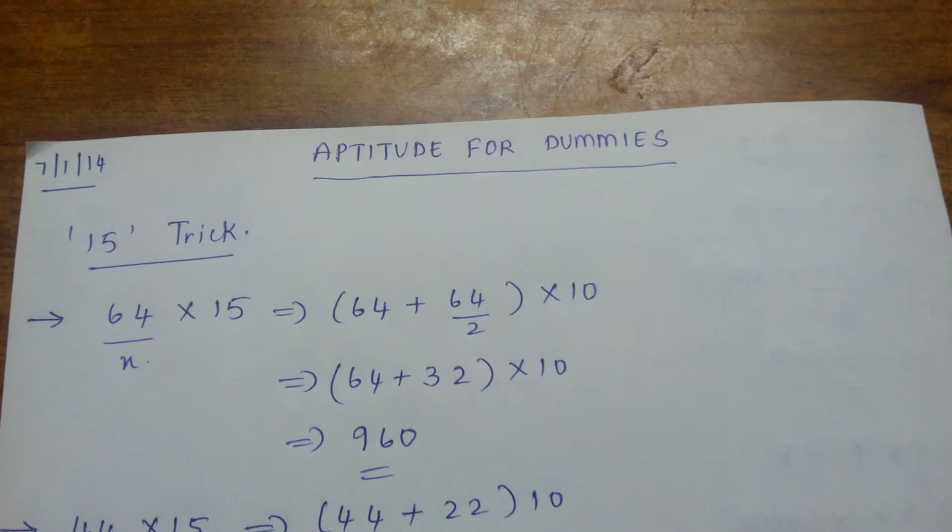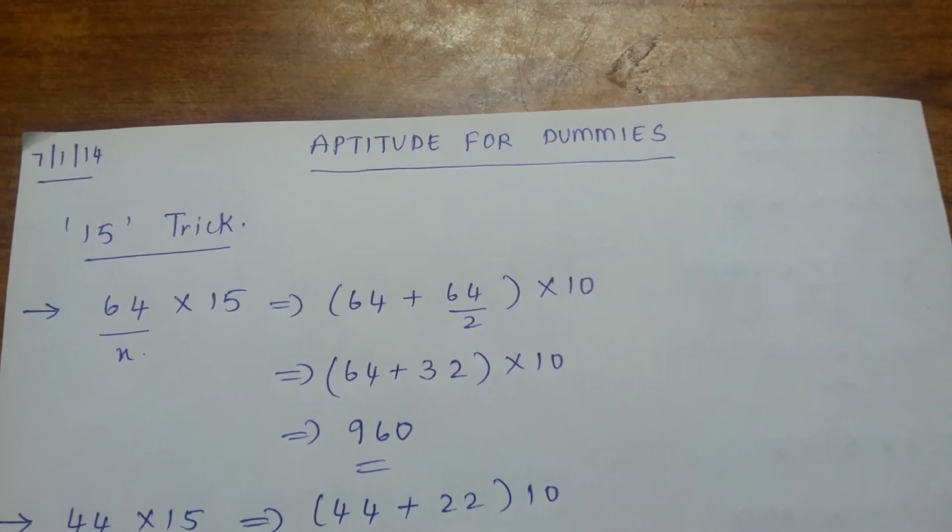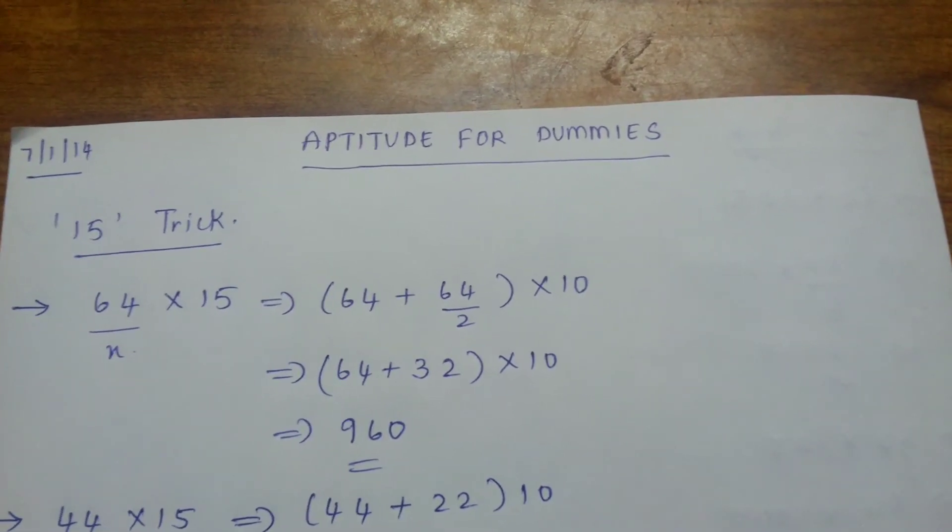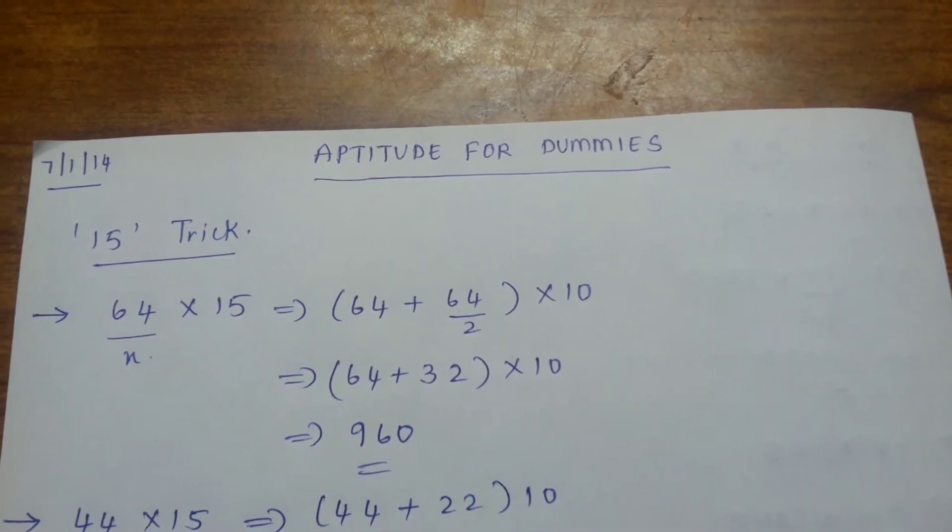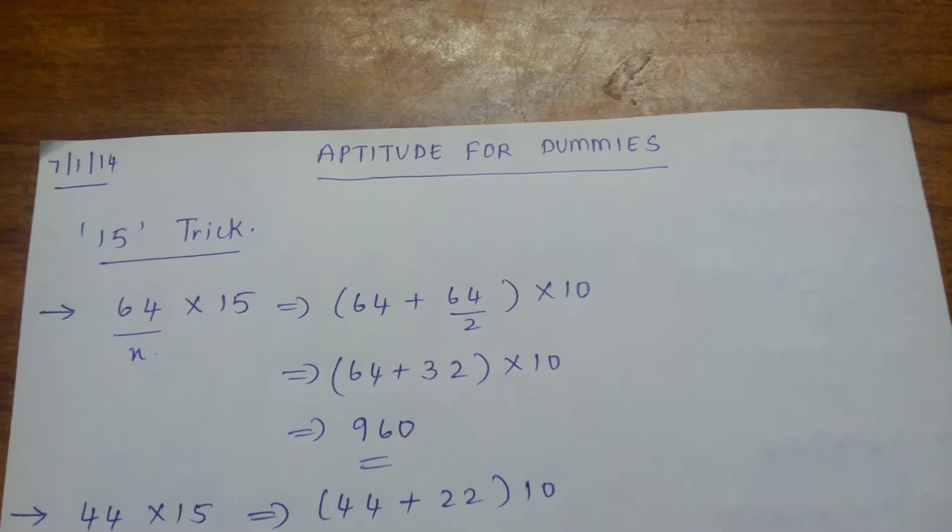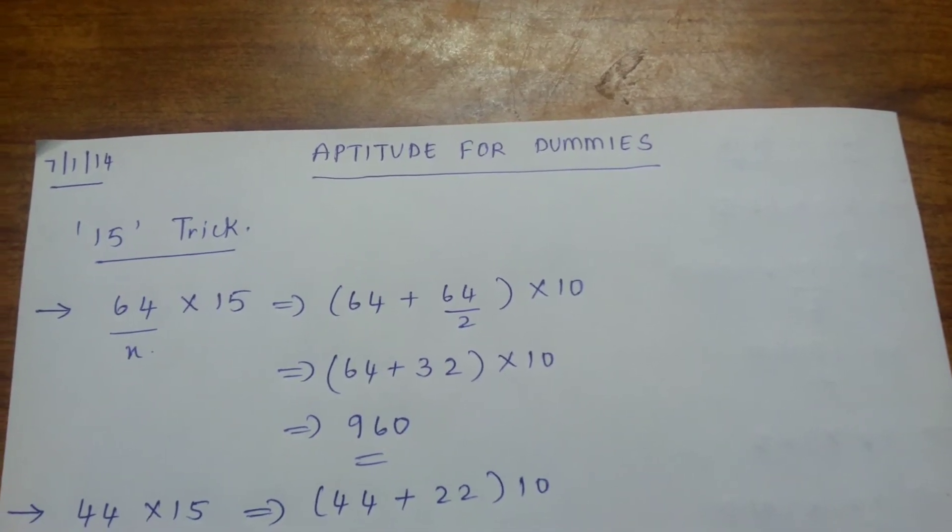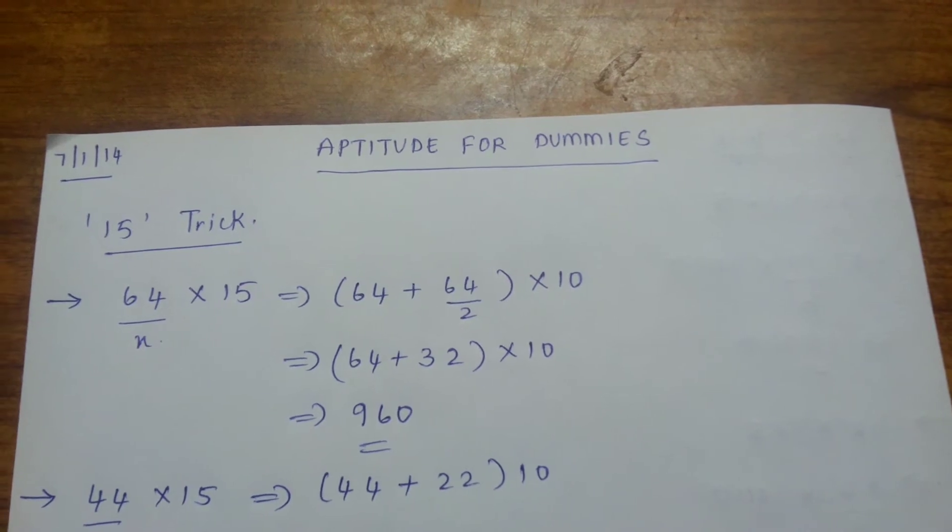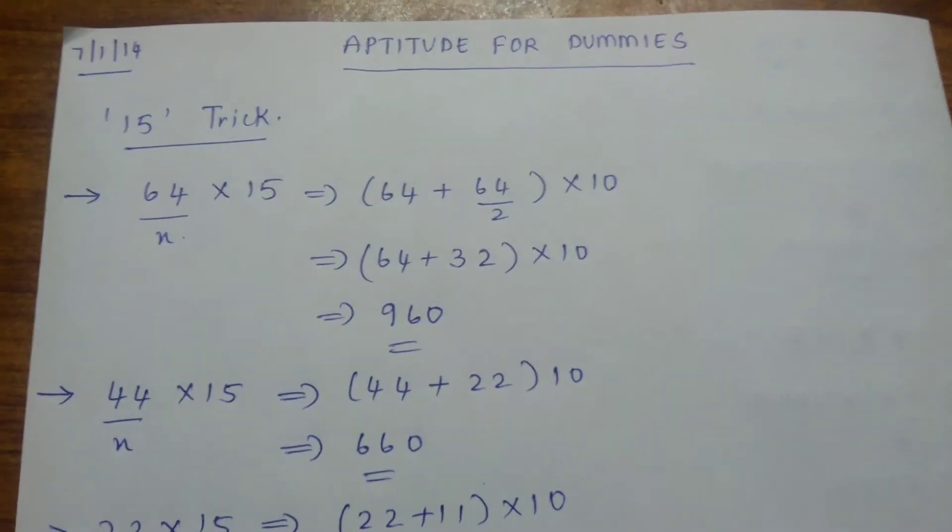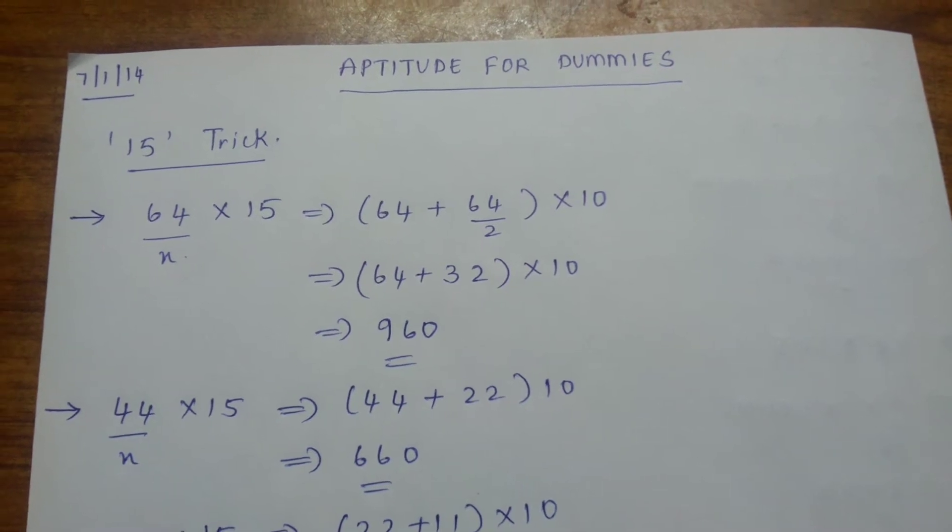In this example we can see 64 into 15. The trick is the left side number should be added to half of it. That is 64 plus half of 64, which is 64 by 2, then multiplied with 10. That is 64 plus 32 into 10, which equals 960. Take another example, 44 into 15. The left side digit should be halved and then added: 44 plus 22 into 10 equals 660.